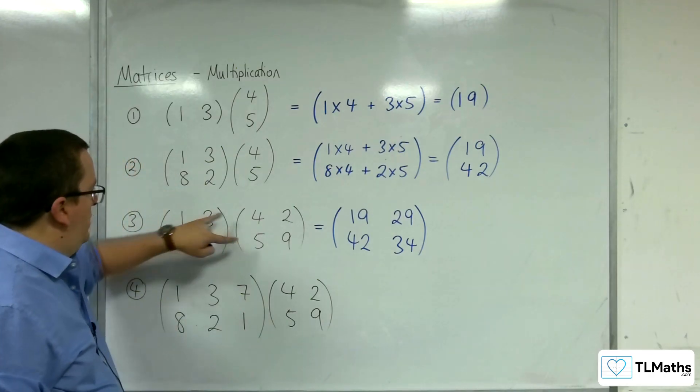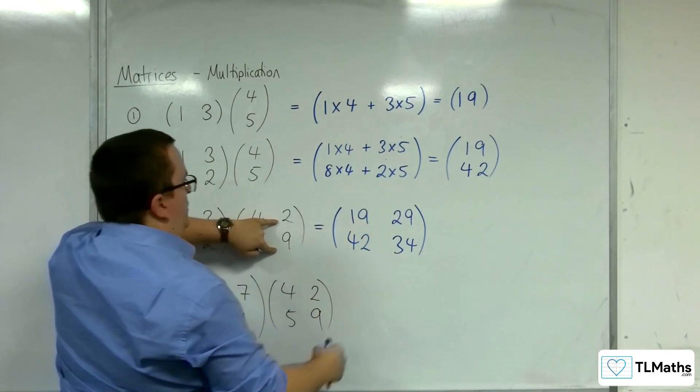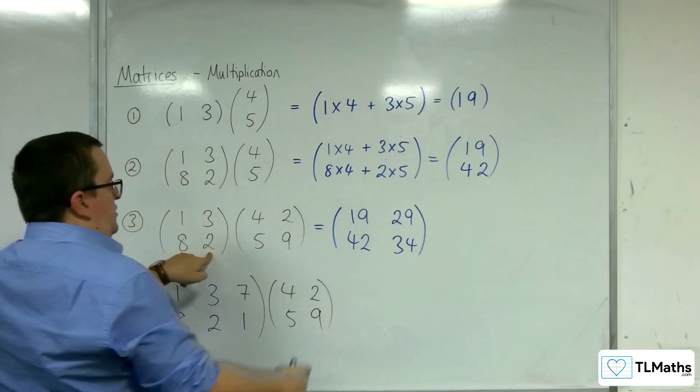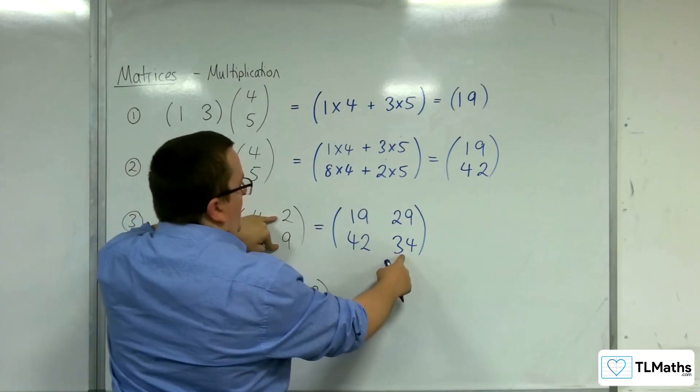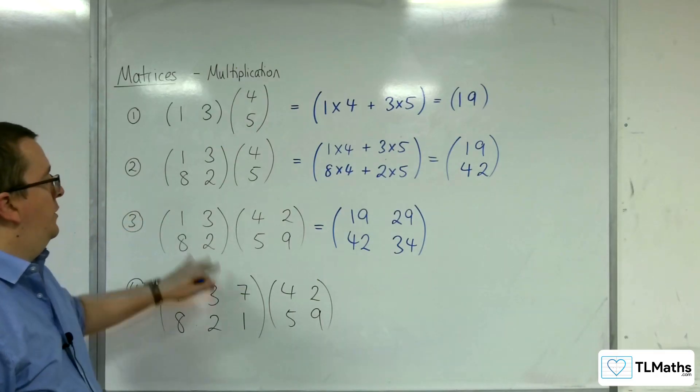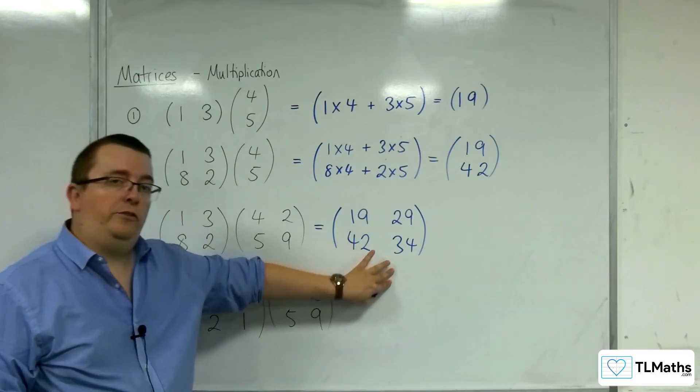So, we did 1, 3 by 4, 5 gives us that term. 1, 3 by 2, 9 gives us that term. 8, 2 by 4, 5 gave us that term. 8, 2 by 2, 9 gave us that term. So, you can see a 2 by 2 times a 2 by 2 gave us a 2 by 2.